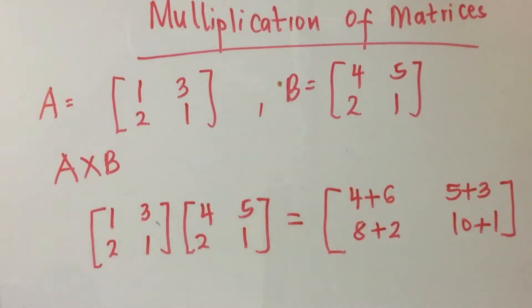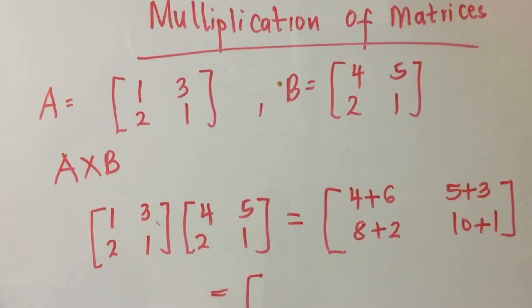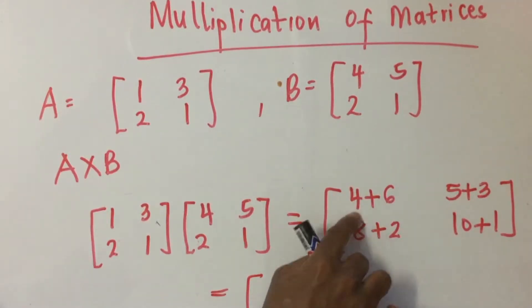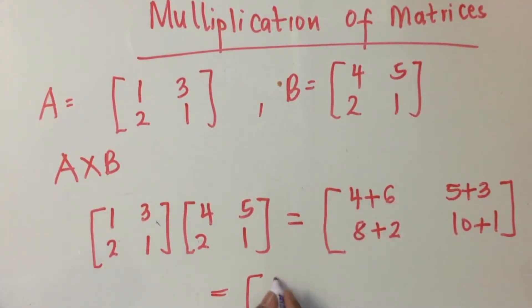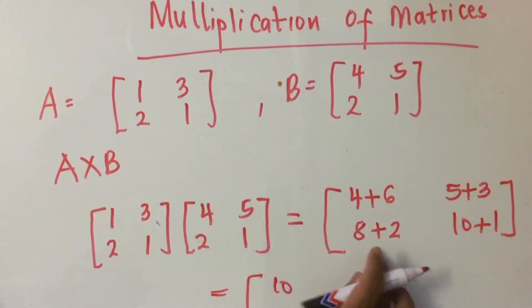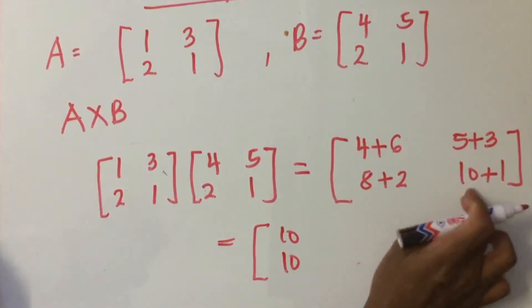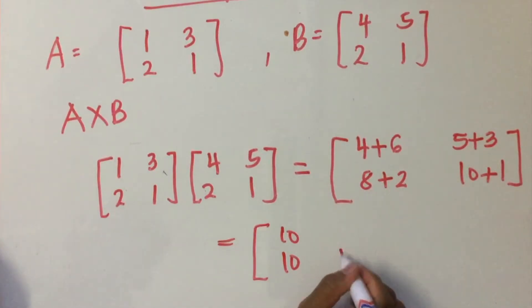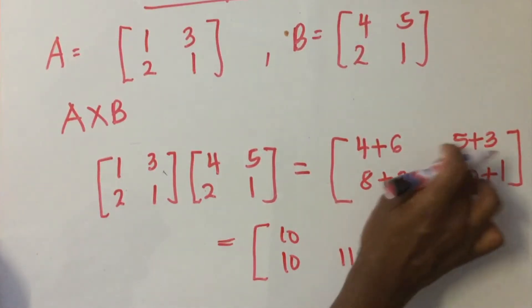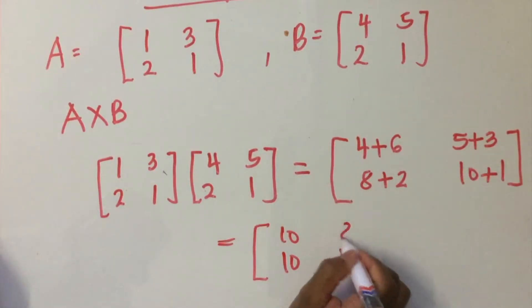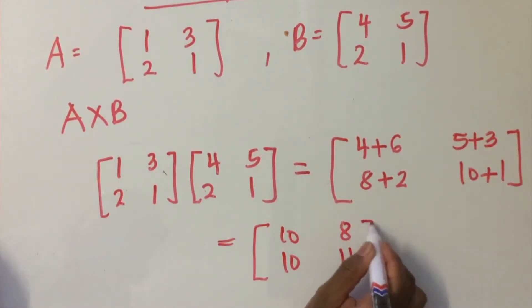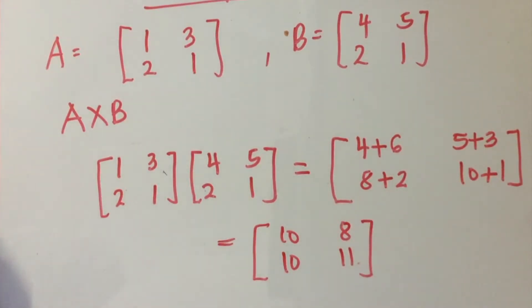So we have: 4 plus 6 is equal to 10; 8 plus 2 is equal to 10; 10 plus 1 is equal to 11; 5 plus 3 is equal to 8.